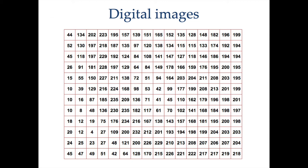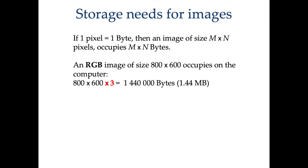If one pixel occupies one byte, you can easily calculate how much memory an image will take on your computer, unless it is compressed. This is useful to know how many images you can open simultaneously, because your computer has a certain amount of RAM used when you process an image. For instance, an image of 800 by 600 pixels — you calculate the size by multiplying 800 times 600 — and if it is a color image, that image is stored three times in memory, one for each channel.